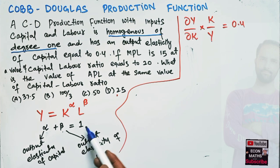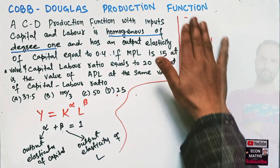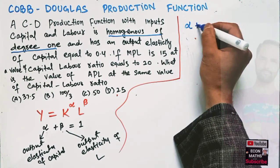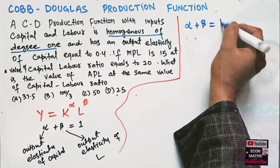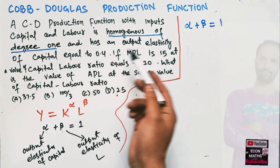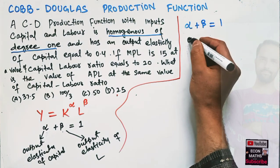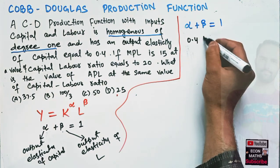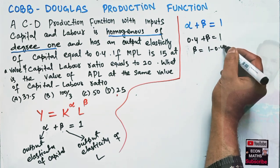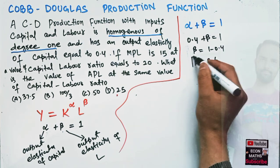Homogeneous of degree 1 means the sum of output elasticities must equal 1, so alpha plus beta equals 1. We are given that the output elasticity of capital, alpha, equals 0.4. Therefore 0.4 plus beta equals 1, which means beta equals 0.6. So our output elasticity of labor is 0.6.